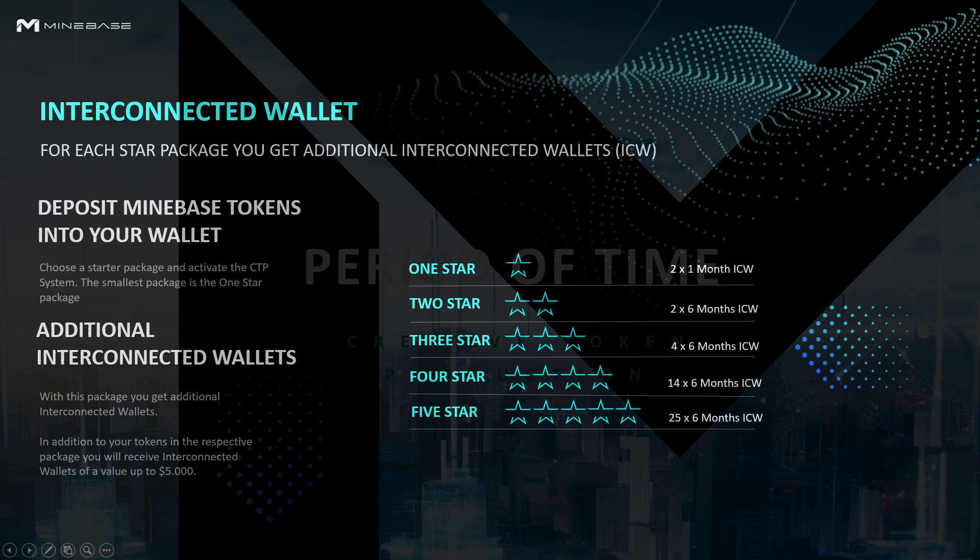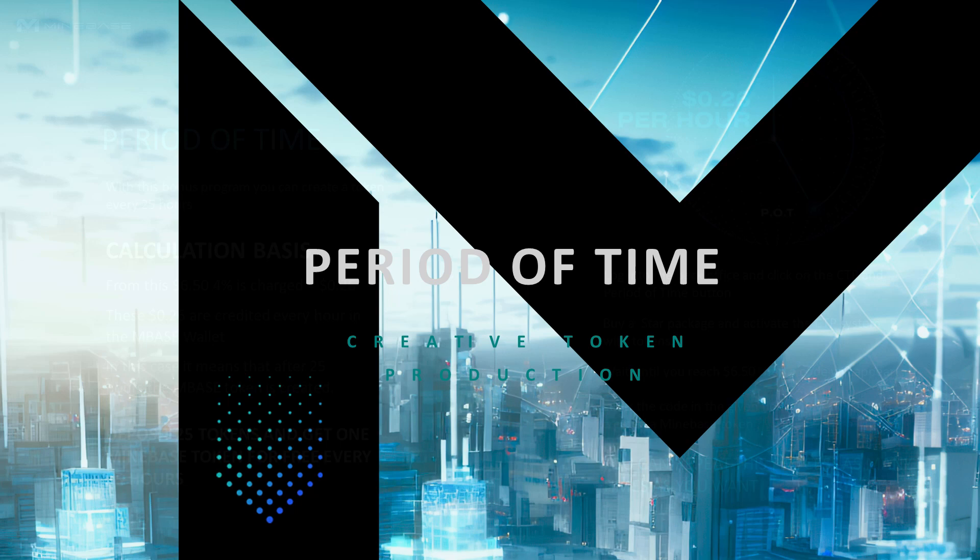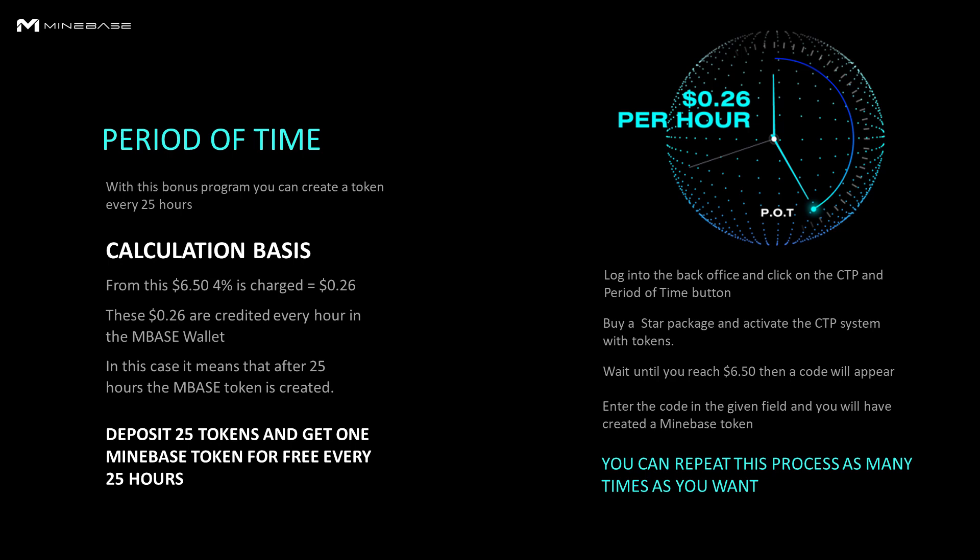What is Period of Time? With this bonus program, you can create a token every 25 hours. From the $6.50 creation price, 4% is credited — that is 26 cents. This 26 cents is accumulated per hour in the Minebase wallet. After 25 hours, the Minebase token is created. Log in to your back office and click the CTP and Period of Time button.